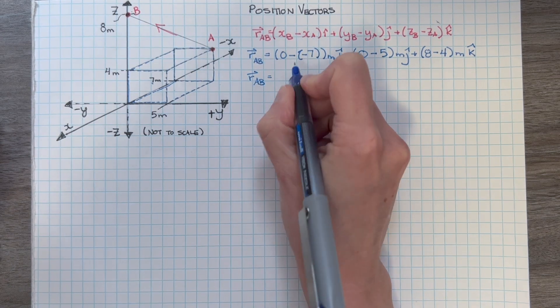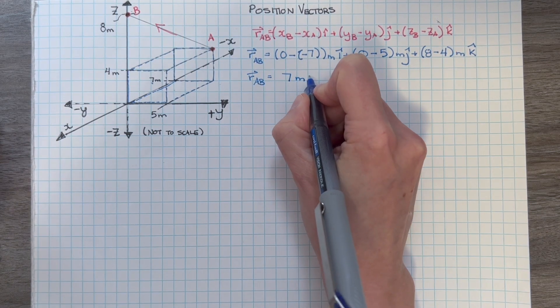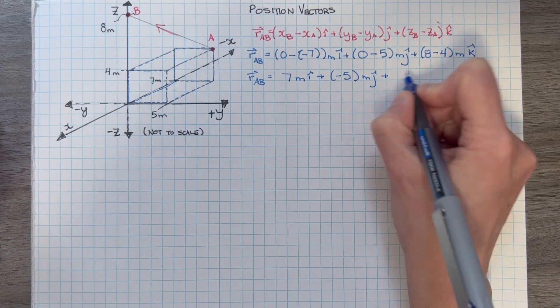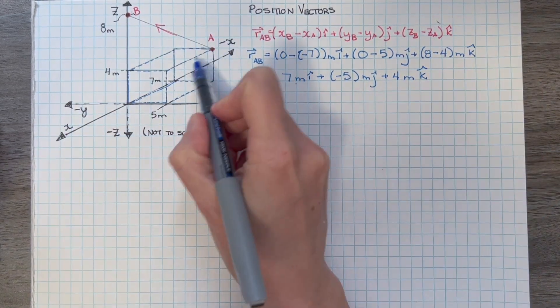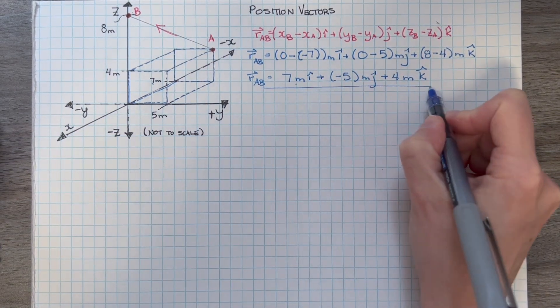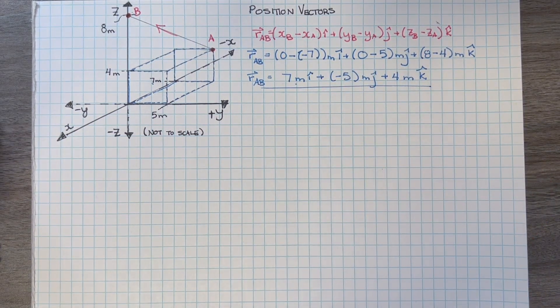From A to B, we move 7 in the positive x direction, 5 in the negative y direction, and 4 in the positive z direction. This is our position vector, describing where B is relative to A.